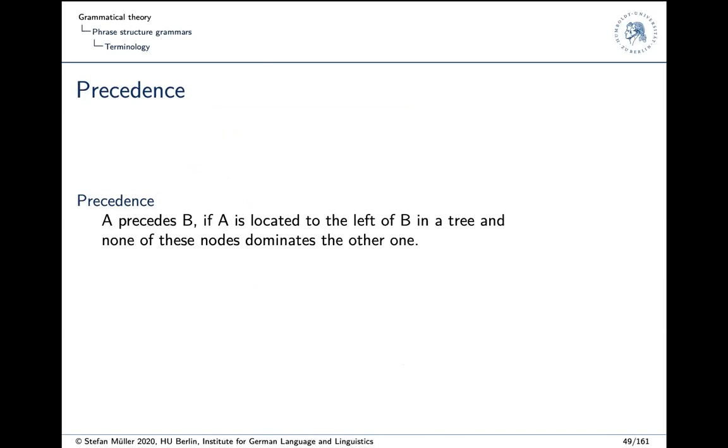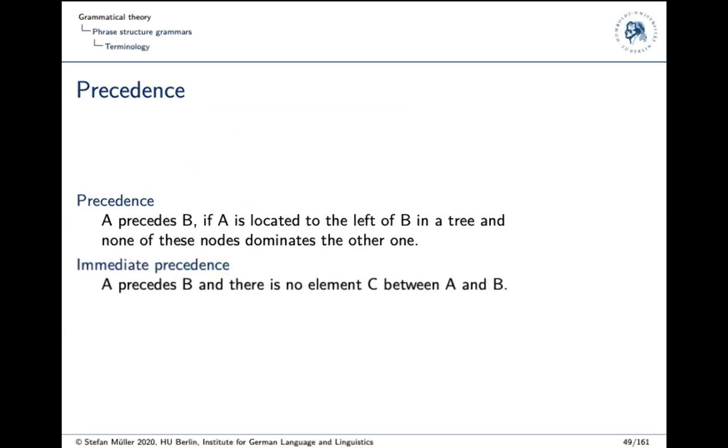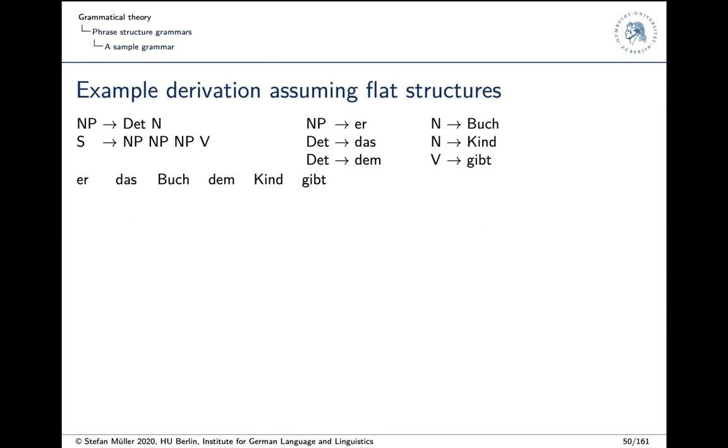Another thing we talk about is precedence. A precedes B if A is located to the left of B in a tree and none of these nodes dominate the other one. Immediate precedence: A precedes B and there is no element C between A and B. Also obvious.